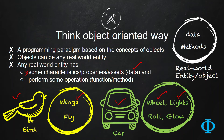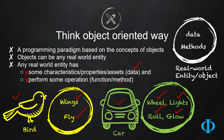The second part is that all these real-world entities can perform some kind of operations. For example, a bird can fly, a car can roll, the lights of the car can glow. All these are different types of operations that an object can perform, and these operations are known as functions or methods. So in summary, any real-world object can have two different parts: the first part is data, and the second part is methods or functions.